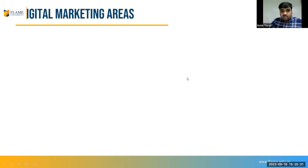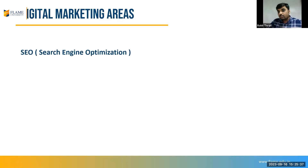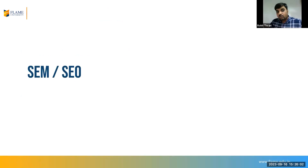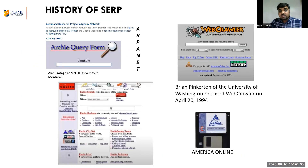Now let's move to the areas of digital marketing we'll focus on. Digital marketing is much broader, but in the interest of time we'll cover: search engine optimization, social media marketing, search engine marketing, and content marketing. It's also important to understand how SEM is different from SEO — search engine marketing versus search engine optimization. Let's also look at the history of search engine result pages.